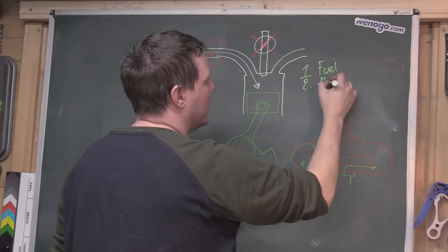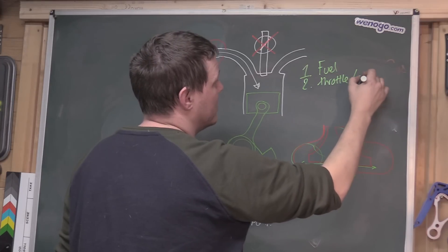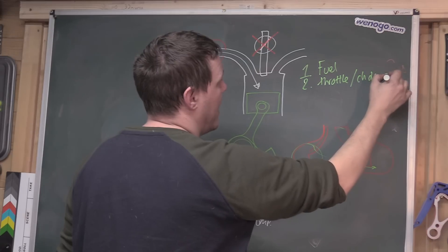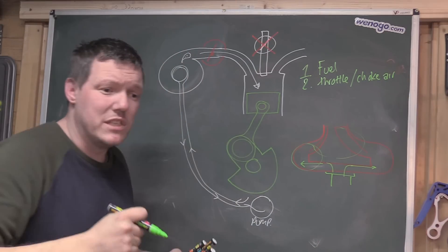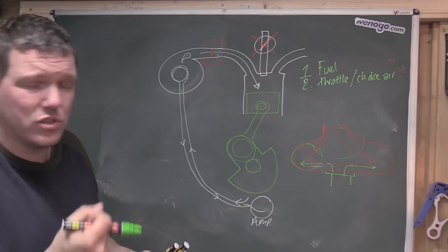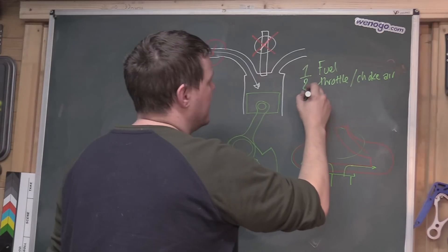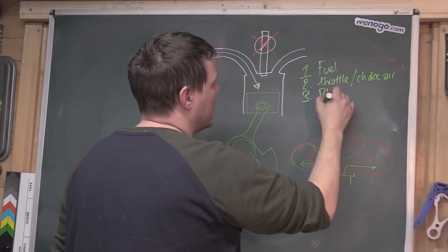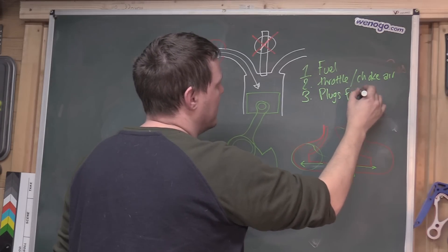So it's down to why diesels, why petrols don't have diesel runaway, is because of the fuel itself, to the throttle body, or basically you've got a choke for the air. And what I mean by choke is you literally grab it by its neck and choke it to death. And number three is the spark plugs fouling.